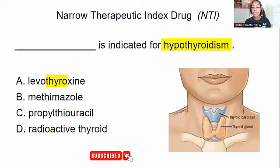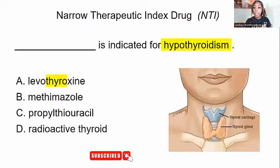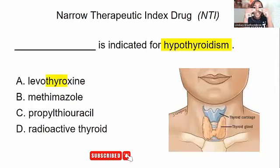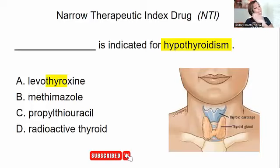Levothyroxine is used to treat hypothyroidism. Hypo means low — so while hyper means you can't sit down, hypo means you have no energy to get up. The word 'thyro' in hypothyroidism should connect you to 'thyro' in levothyroxine, so you can recognize that levothyroxine is the right answer for treating hypothyroidism.